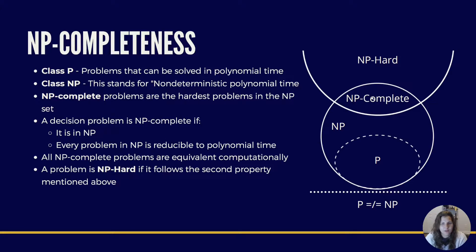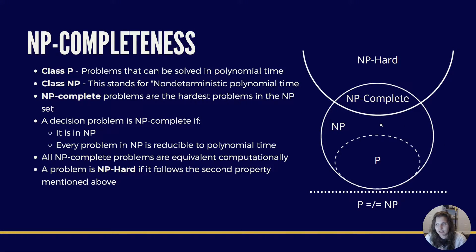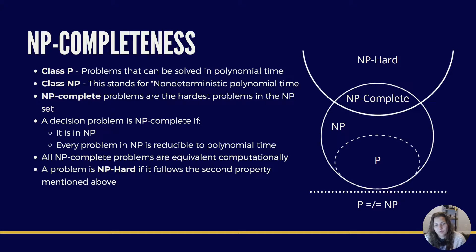We also have NP complete. NP complete problems are the hardest problems in an NP set. A decision problem is NP complete if it is in NP, which means any given solution for NP complete problems can be verified quickly, but there is no efficiently known solution. And every problem in NP is reducible to polynomial time. All NP complete problems are equivalent computationally.